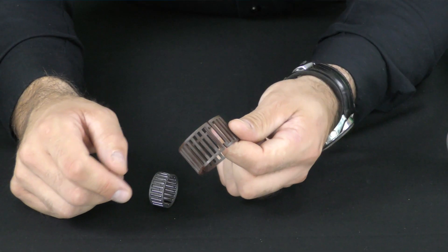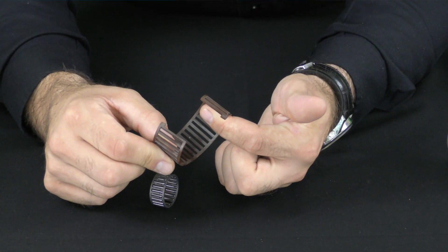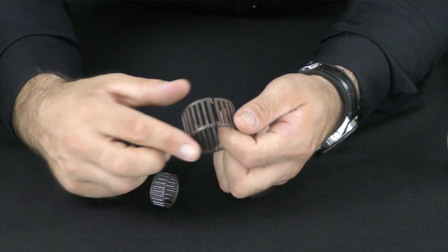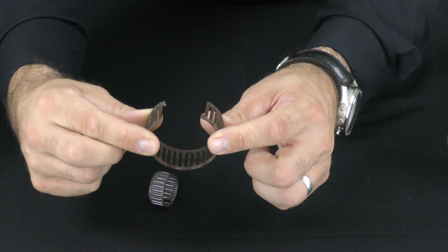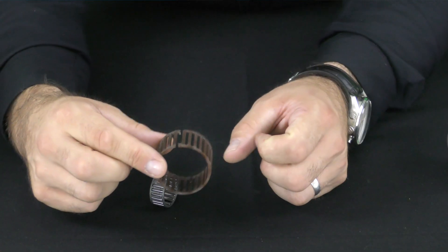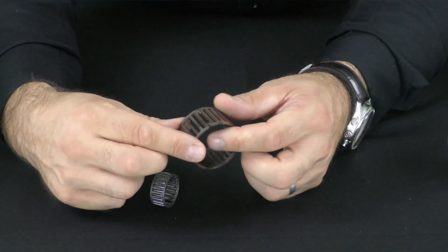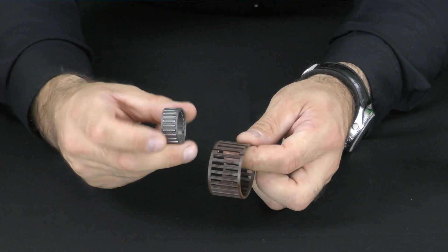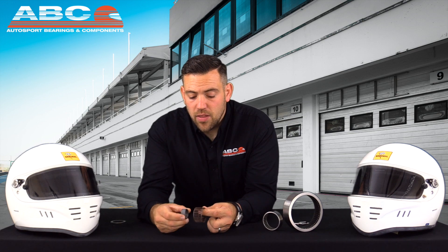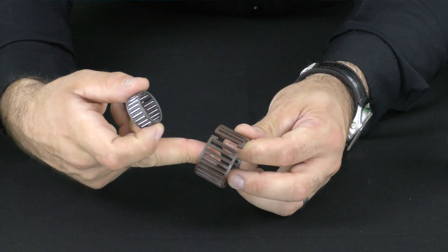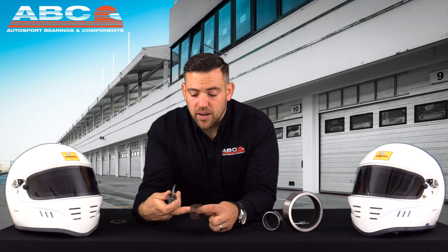This split cage needle roller bearing can be found commonly in gearboxes. The reason why it's normally used is that it can be easily opened up, placed over a feature, and then placed into the right section of the shaft and the gearbox. It differs from the steel cage option I showed you earlier in that it has a plastic cage and also it has the split to be easily assembled.